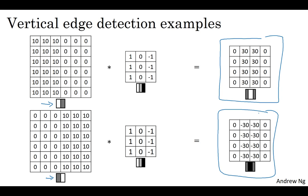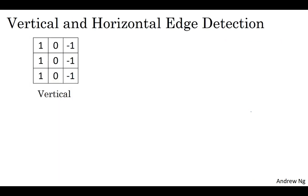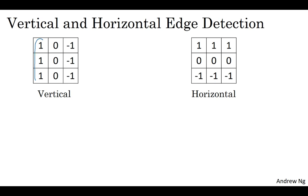Let's see some more examples of edge detection. This three by three filter we've seen allows you to detect vertical edges, so maybe it should not surprise you too much that this three by three filter will allow you to detect horizontal edges. A vertical edge is a three by three region where pixels are relatively bright on the left and relatively dark on the right. Similarly, a horizontal edge would be a three by three region where pixels are relatively bright on top and relatively dark in the bottom row.